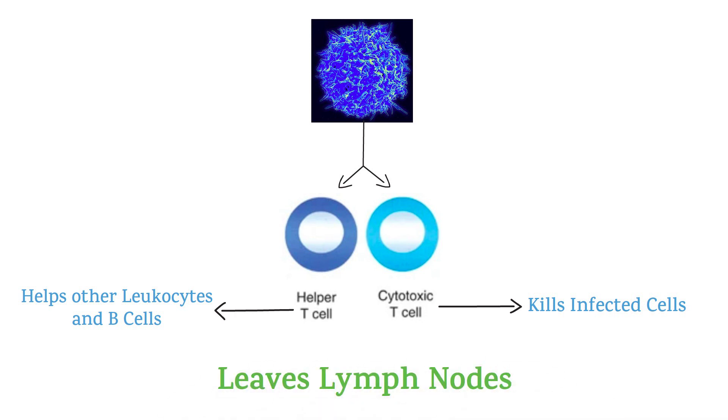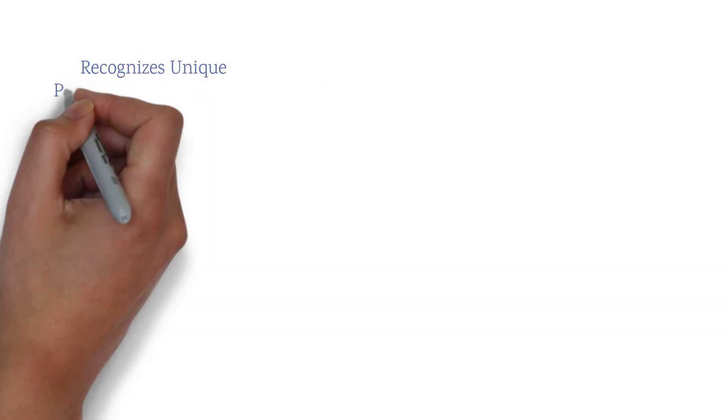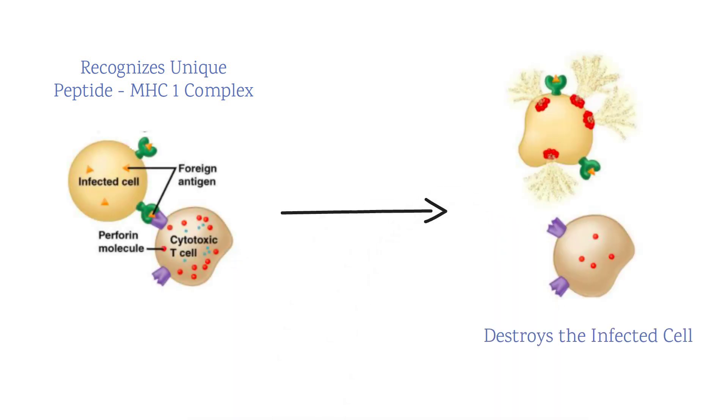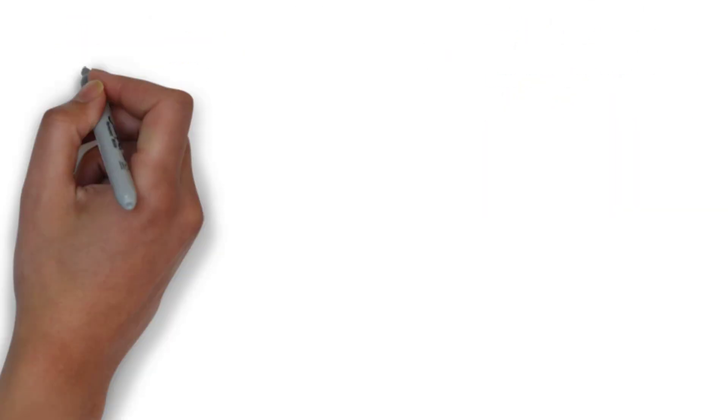The killer T cell, when it recognizes this unique peptide-MHC 1 complex on the infected cell, destroys this infected cell by releasing perforin and granzymes.